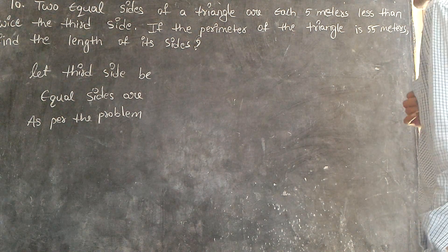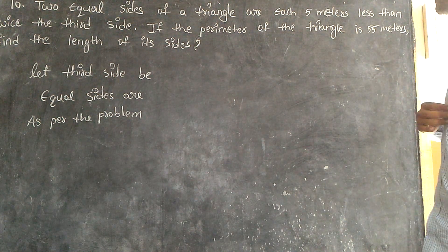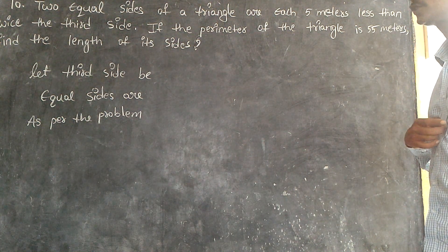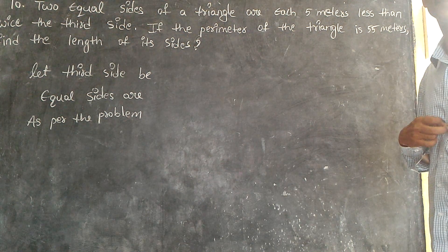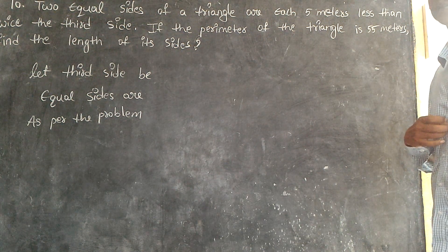Two equal sides of a triangle are each 5 meters less than twice the third side.